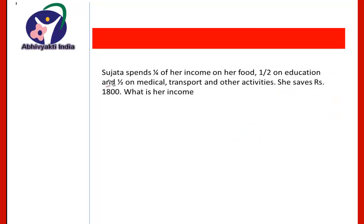But if the question is like this: Sujata spends 1/4 of her income on her food, half on education, and half on medical, transport and other activities. She saves rupees 1,800. What is her income? In this case, first we add all these fractions. That is 1/4 plus 1/2 plus 1/2. And after adding, we get it 19 by 20.